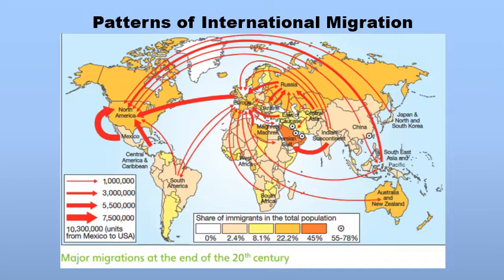For example, America is a country in the western part of the world that has received a huge number of people as migrants, whether temporary or permanent. The majority of migrants who entered America were from Mexico, South America, Europe, and even from other parts of the world such as Indonesia, which contributed a huge number of people migrating to America.